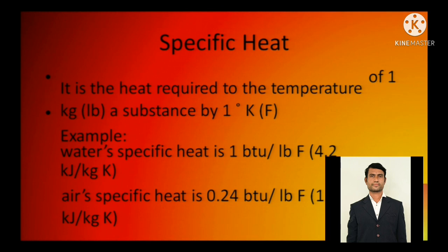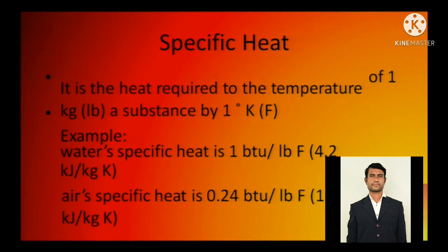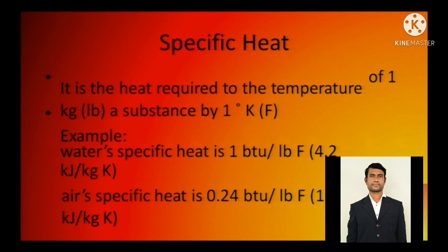Specific heat is the heat required to raise the temperature of 1 kg of a substance by 1 degree Kelvin. The specific heat of water is 1 BTU per pound per degree Fahrenheit, or 4.2 kilojoules per kilogram Kelvin. This means to increase the temperature of 1 kilogram of water by 1 degree Kelvin, you need to supply 4.2 kilojoules. The specific heat of air requires only 1 kilojoule — that is the difference.